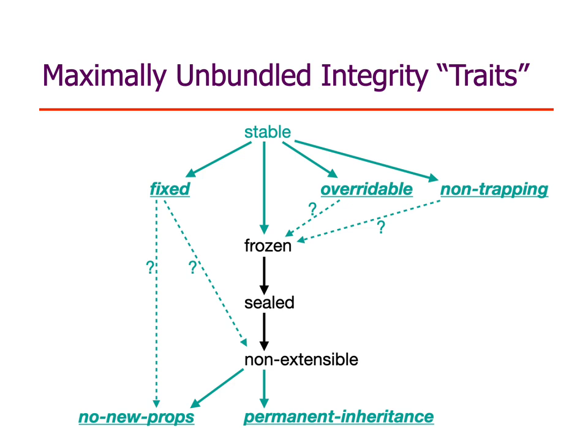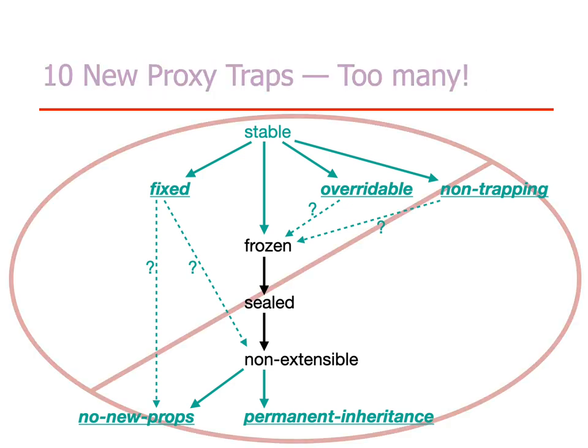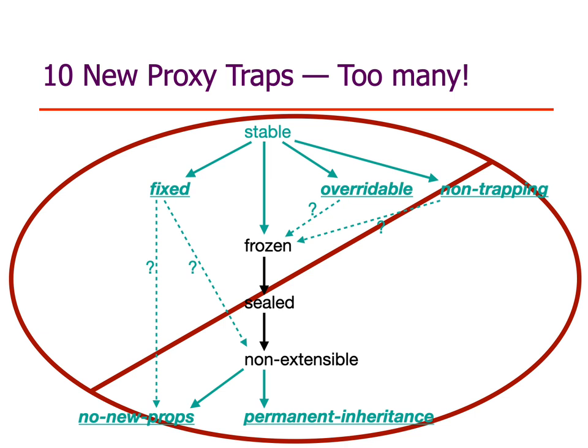This is what the fully unbundled picture looks like. The nice thing about this from a language design perspective is orthogonality — unbundling into these five different explicit integrity traits means they are now orthogonal. The cost is that it would imply 10 new proxy traps, since we need two traps per explicit integrity level. That's quite a high cost. Alternatively, what Matthew suggested is two new parameterized proxy traps: protect (the generalization of prevent-extensions, to bring about the integrity level) and is-protected (the corresponding predicate, where you provide the trait name). This would be nicely future-proof for introducing new integrity traits in the future.